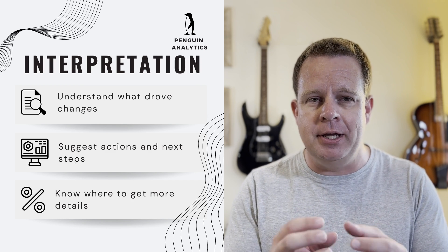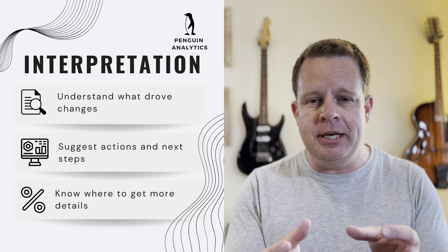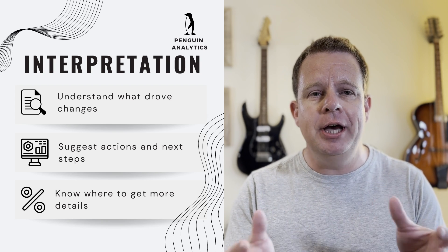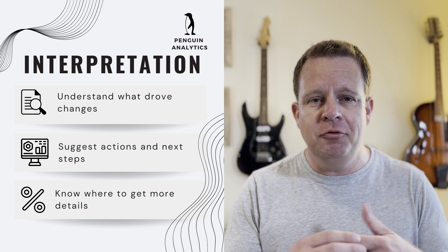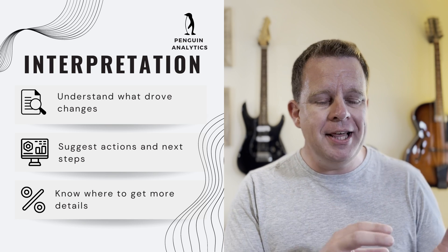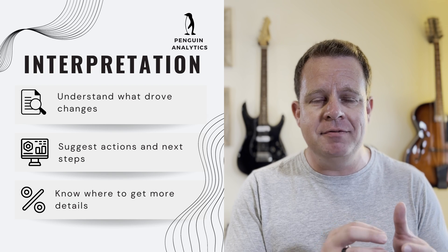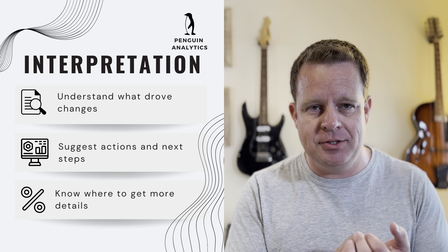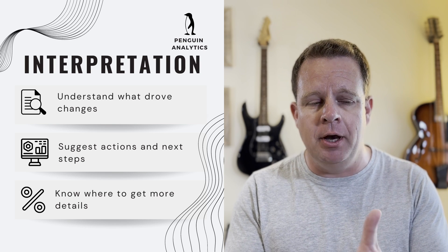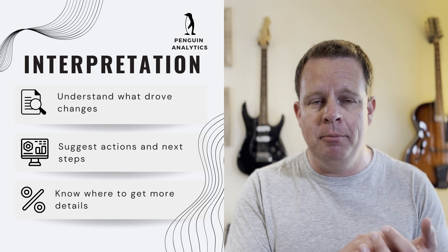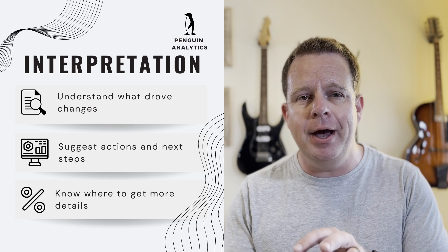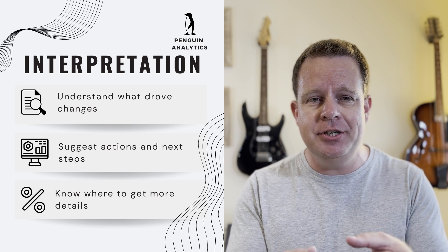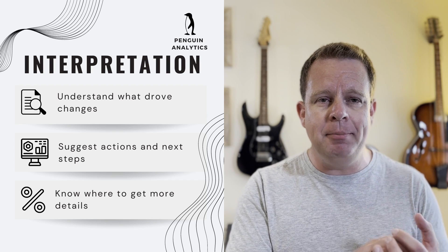The third level is interpretation — relating the trends and averages you see back to the real world. When you look at a time series of sales data and see a positive trend, what does that mean on the ground? Does it mean salespeople are selling more products, or that there's more foot traffic through stores? If total revenue is up, does it mean you're selling the same number of products at a higher price? All of this involves relating the data in a table or visualization back to what's actually happening.